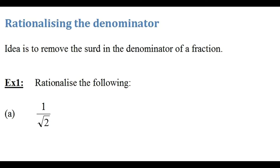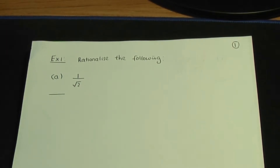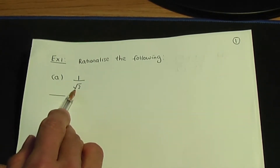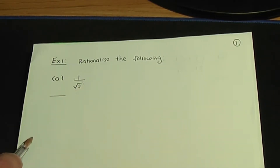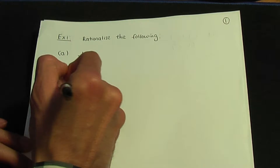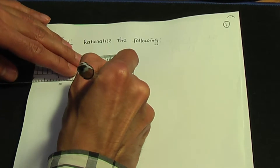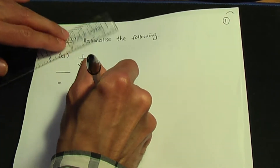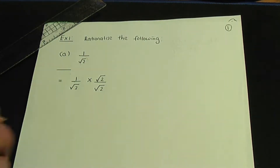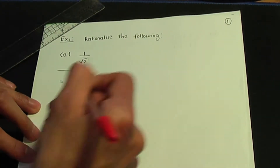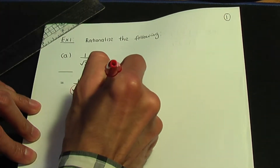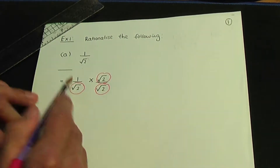So here is example one, part A. We're going to rationalise one over root two. So back to the paper and pen — one over root two. If you have a surd only in the denominator, which is root two, in order to rationalise, we need to multiply both the numerator and the denominator by that exact term, which is root two.